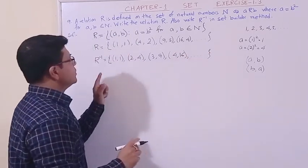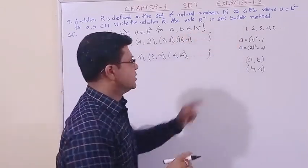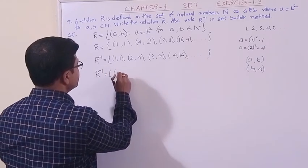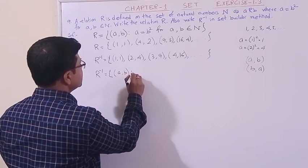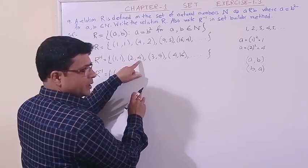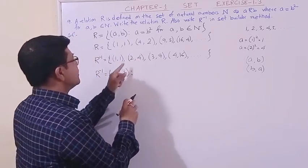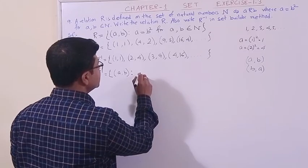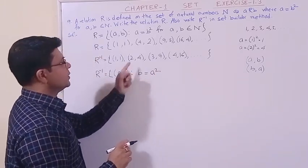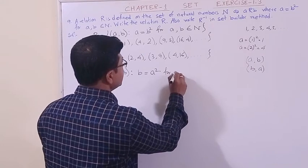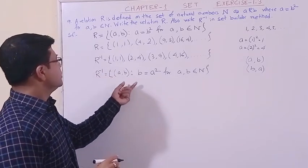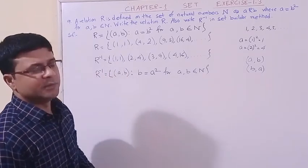Now we have to write it in set builder method. So R inverse is the set of ordered pairs (a, b) such that the second component is the square of the first. That is, b equals a squared, for a and b both belonging to the set of natural numbers. So in this way we can find the inverse relation in set builder method.